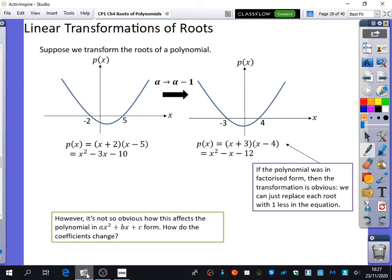Okay, we're going to be thinking now about linear transformations of roots. Suppose that we transform the roots of a polynomial. I've got this polynomial here, and the roots are clearly -2 and 5, which I'm calling alpha. I could work out the quadratic equation by saying it would be (x + 2)(x - 5), so this is x² - 3x - 10. I'm transforming those roots so that I'm taking each root and subtracting 1 from them. You can see this 5 root has become 4, and this -2 root has become -3.